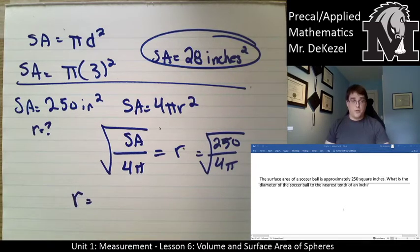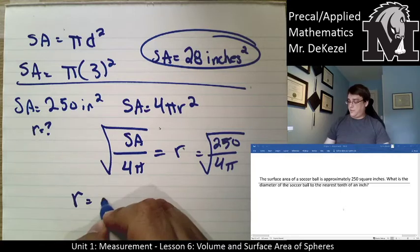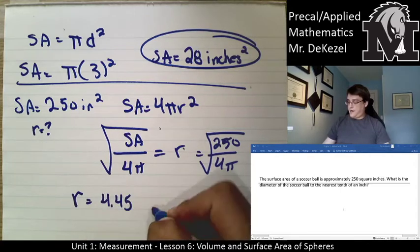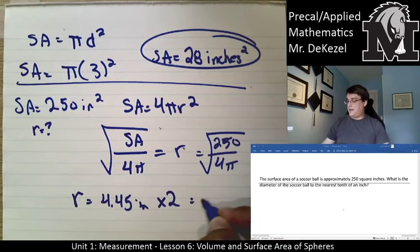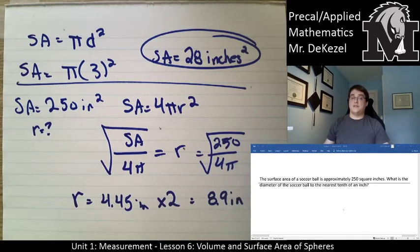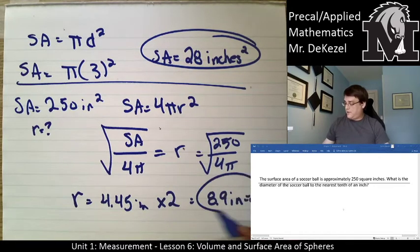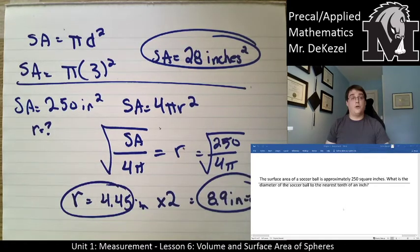So the radius equals... Oh, it's actually asking us for the diameter. We'll find the radius and then we'll double it to find the diameter. It would be 4.45 inches, and if we multiply that by 2 to get the diameter, it's 8.9 inches. My apologies about finding the wrong thing, but we found them both anyway.